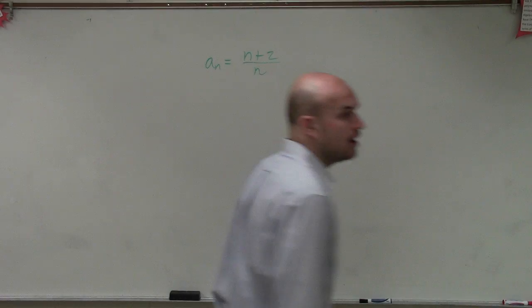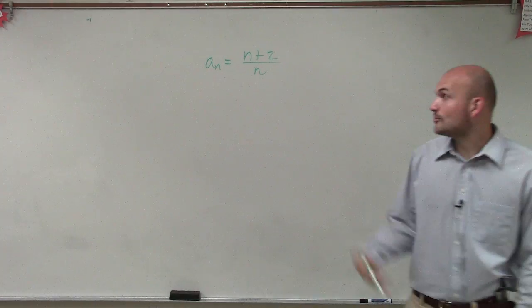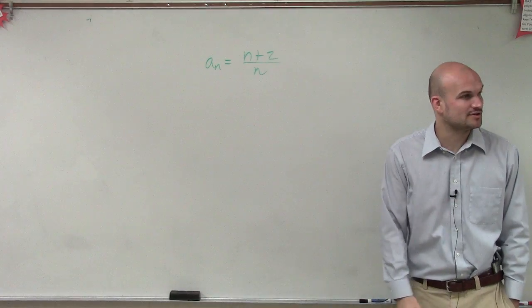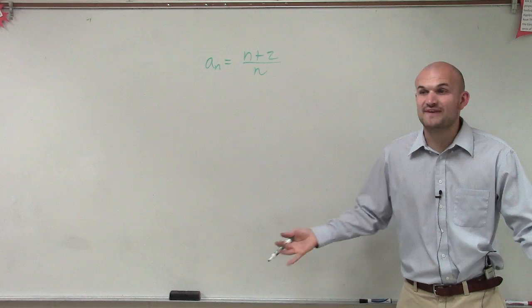You're welcome very much. OK, so now for Jacob, what we have is a_n equals n plus 2 divided by n. And all the question is asking is find the first four terms.